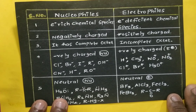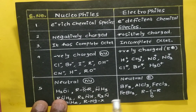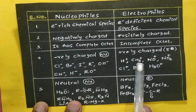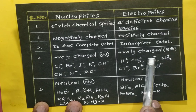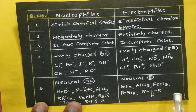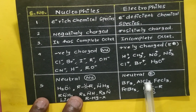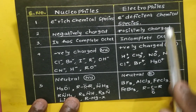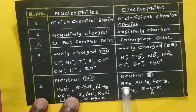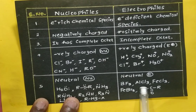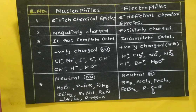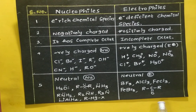Positively charged electrophiles include H⁺, CH₃⁺, NO⁺, NO₂⁺, Cl⁺, Br⁺, H₃O⁺, and others. Neutral electrophiles are also available because electrophiles are electron-deficient compounds. These include BF₃ (boron trifluoride), aluminum chloride, ferric chloride, ferric bromide, ketones, aldehydes, and so on.